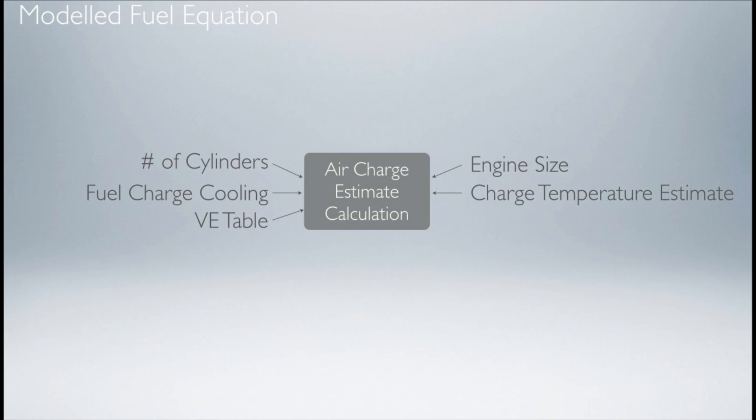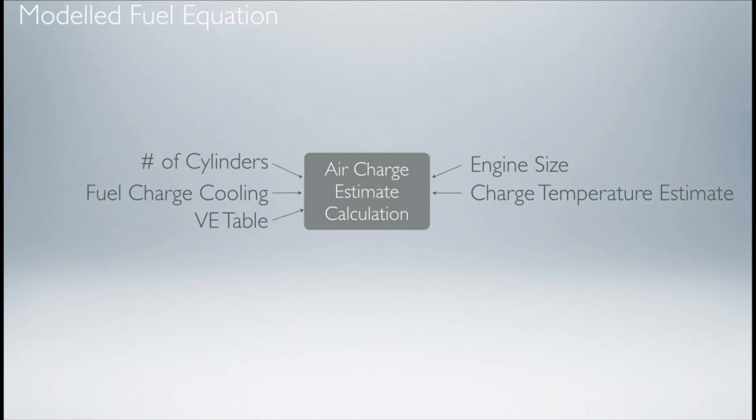The volumetric efficiency table has engine RPM across the top and load down the Y-axis. Values start at 0 for zero airflow and go all the way above 100 — it's a percentage number used for volumetric efficiency. You're going to tune that much like you would tune the fuel table in the traditional fuel mode. The load input is also used on the model fuel equation, and a lot of this depends on your engine setup, throttle bodies, and the load you're using on your fuel table.